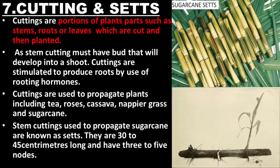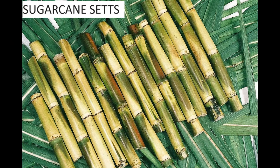Cuttings are portions of plant parts such as stems, roots, or leaves which are cut and then planted. A stem cutting must have a bud that will develop into a shoot. Cuttings are stimulated to produce roots by use of rooting hormones. Cuttings are used to propagate plants including tea, roses, cassava, napier grass, and sugarcane. Stem cuttings used to propagate sugarcane are known as sets; they are 30 to 45 centimeters long and have 3 to 5 nodes.